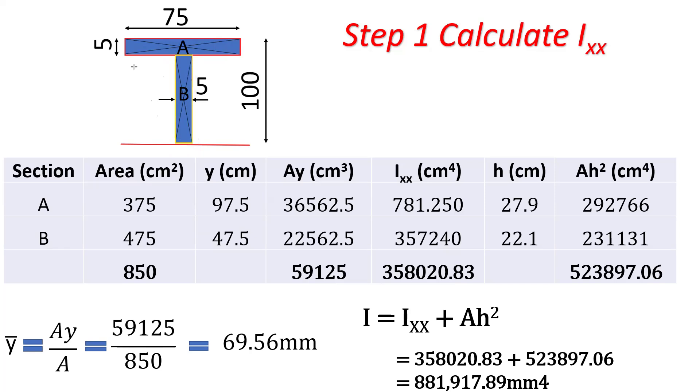The area of A is basically 75 times 5, you get 375. The area for B: the distance from here to here is 100 minus 5, that is 95. 95 times 5, and you get 475.